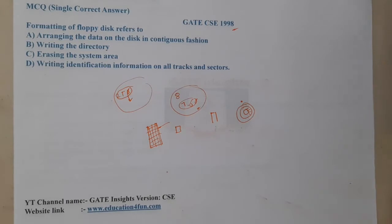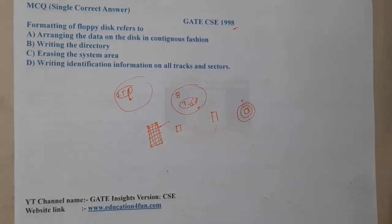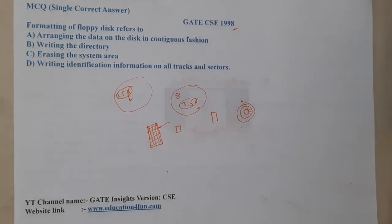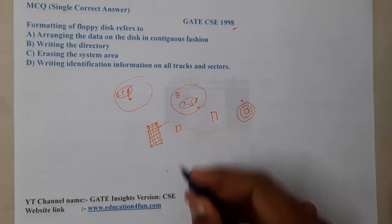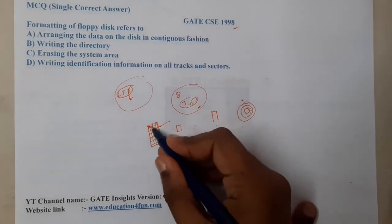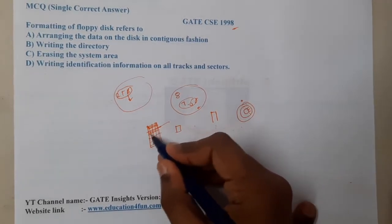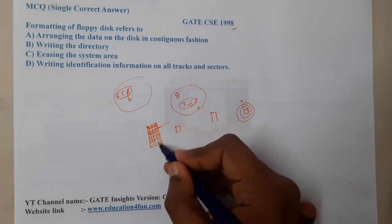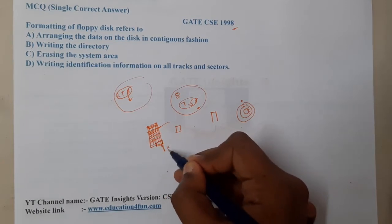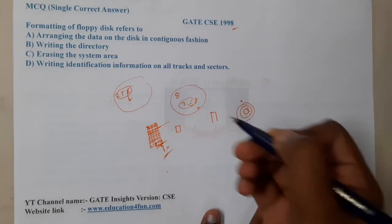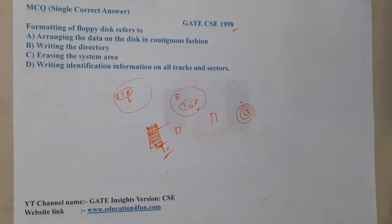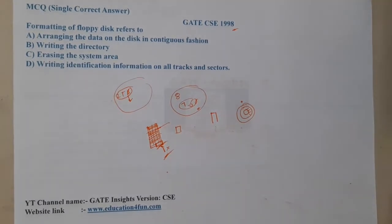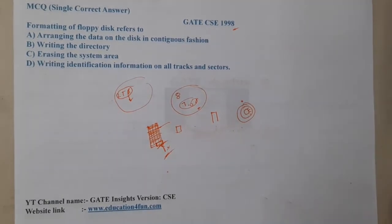That metadata occupies some space. When you format the device, it is going to erase all the user data, but this particular metadata about the file system structure is preserved. That is the reason why even after formatting, the size does not change.